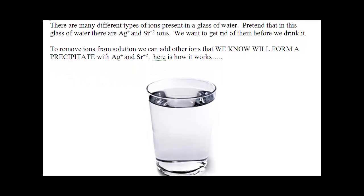Here's my example. We have a glass of water, and let's pretend in this glass of water we've got Ag+ ions and Sr2+ ions. Chances are there's more than those in water, but we're going to keep things pretty simple. What we want to do is remove these ions from solution — we know they're there and we don't want to drink them.